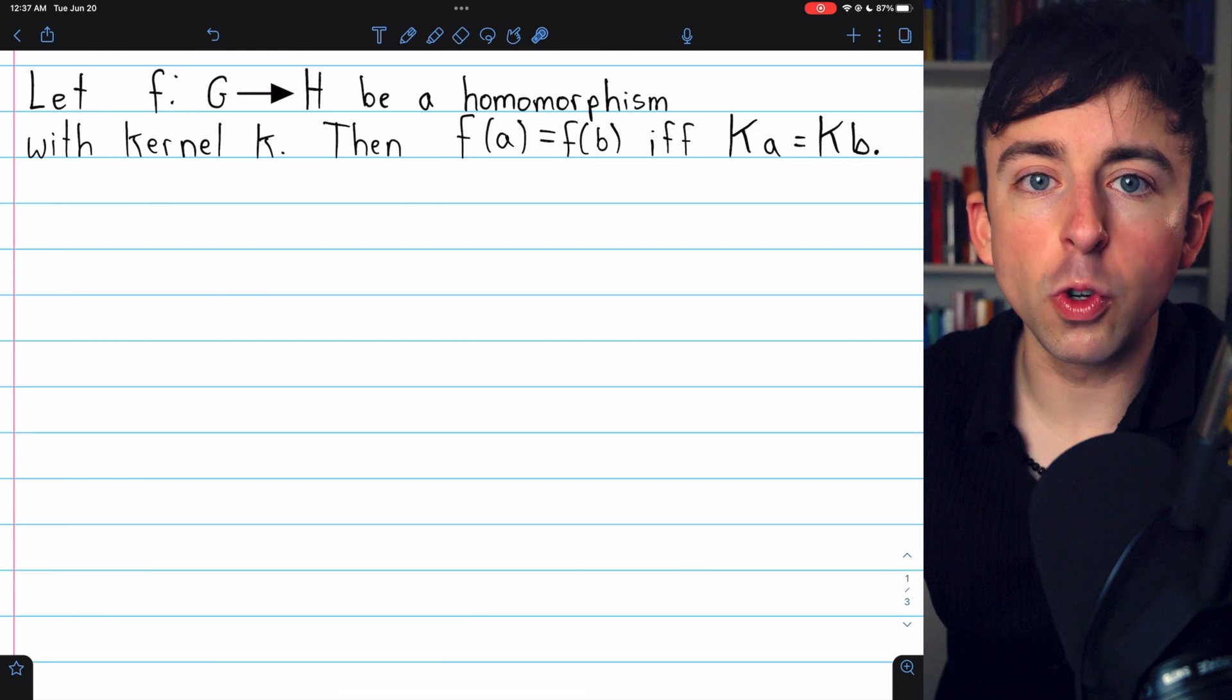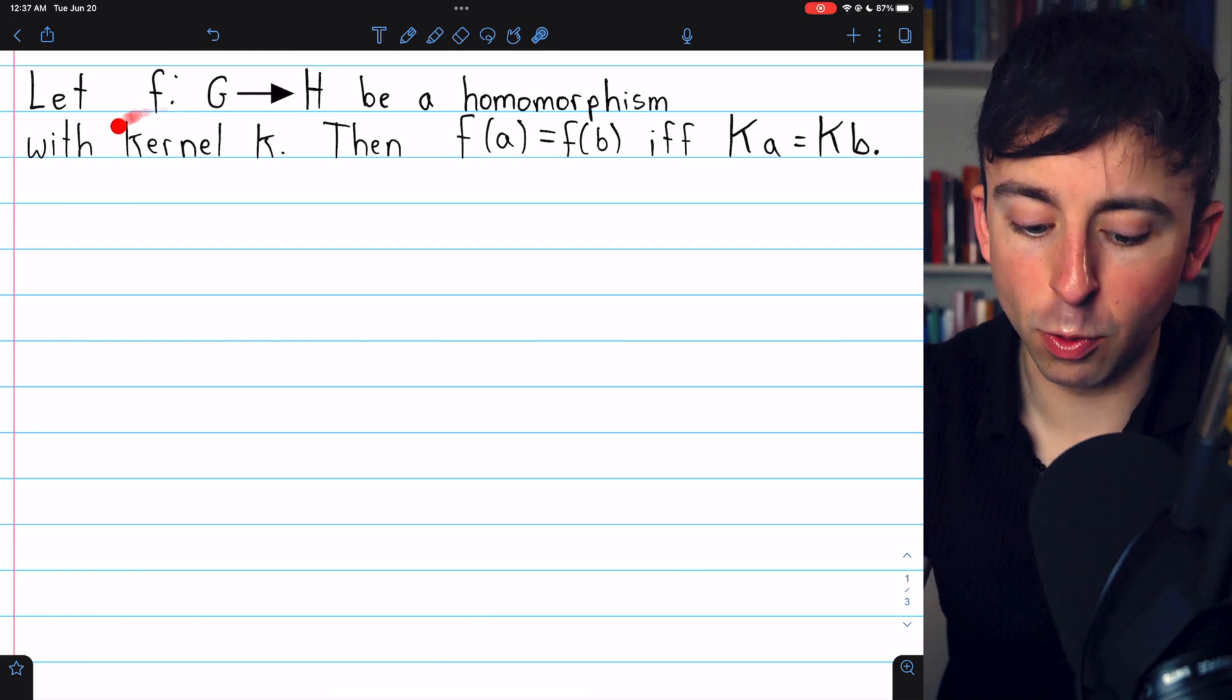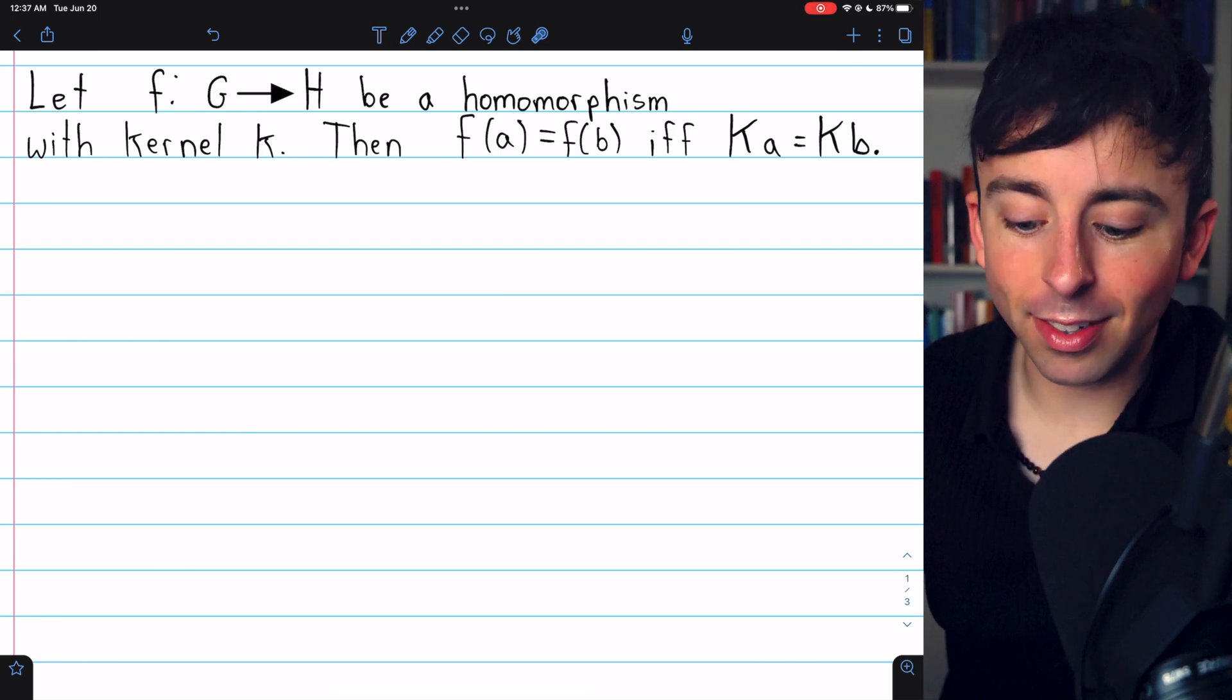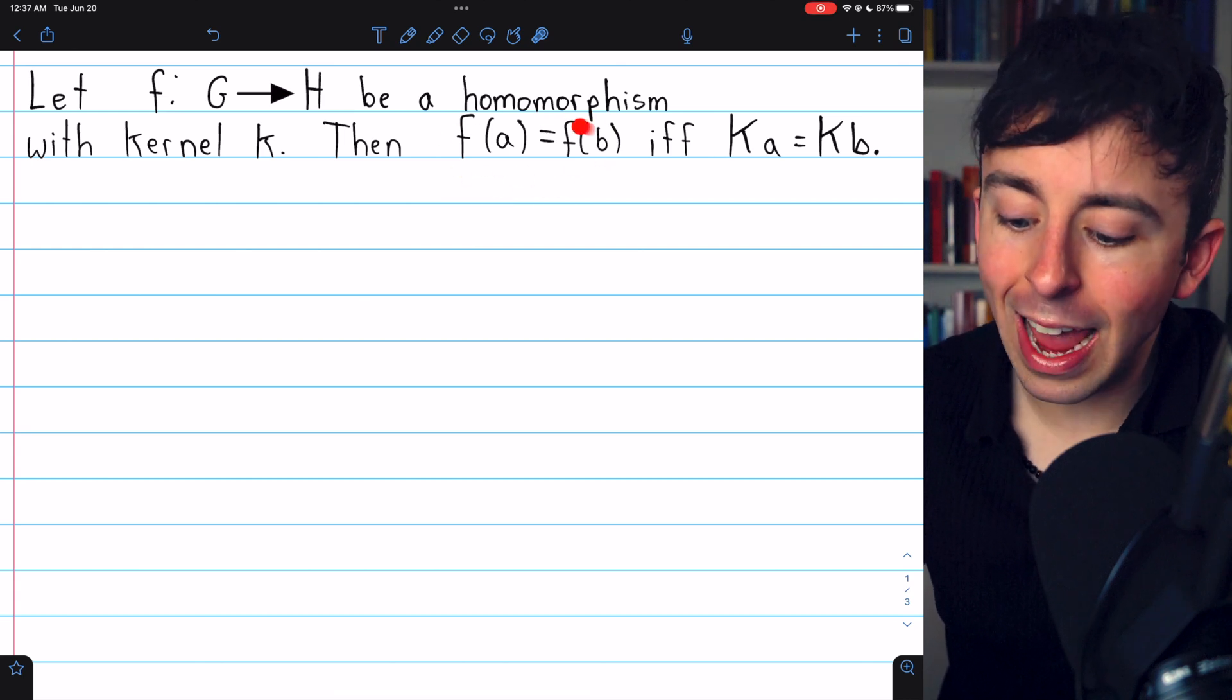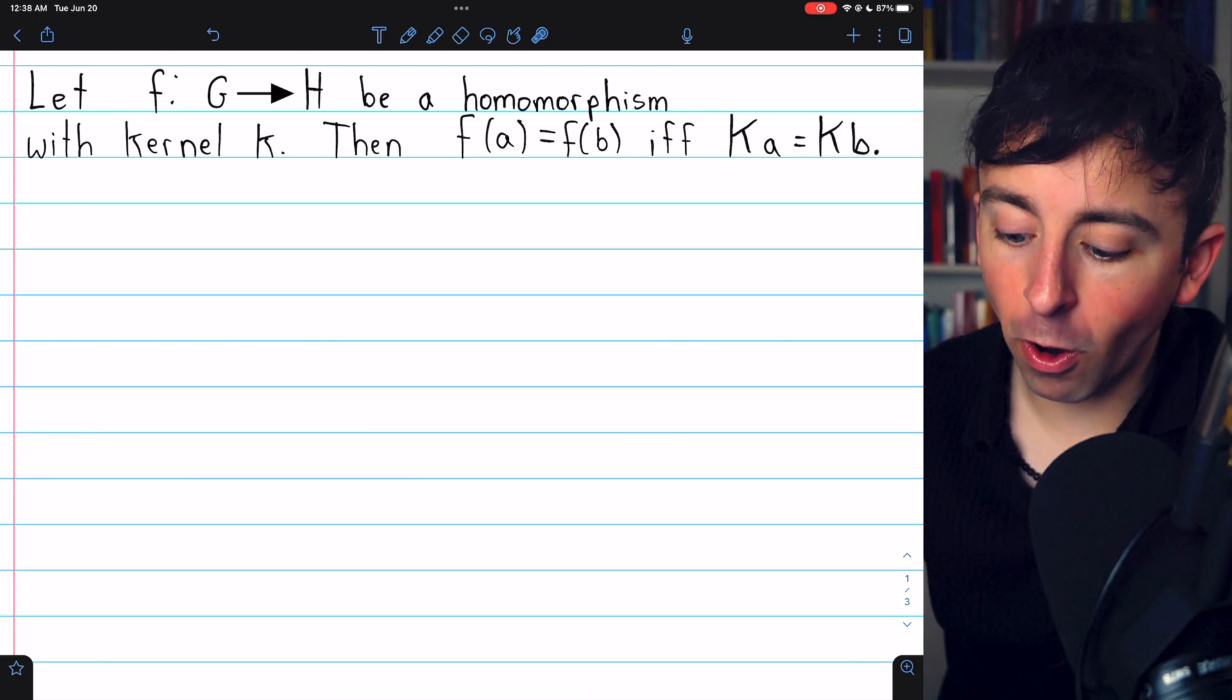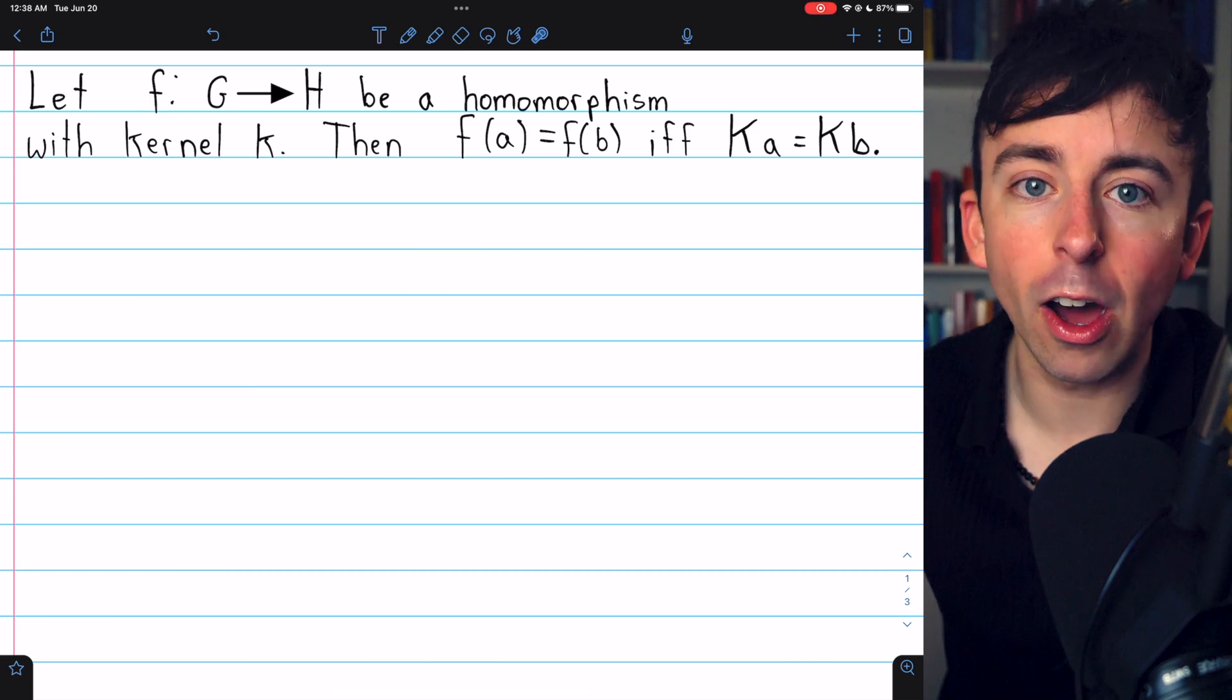And I'll leave links in the description to relevant videos concerning the results I just mentioned, as well as introducing kernels and anything else you might need to review. What this result really says is that the images of two elements of a group under a homomorphism will be the same if and only if those two elements are in the same coset of the kernel of that homomorphism.